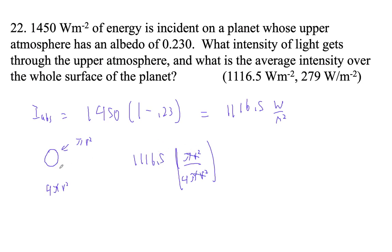The ratio of the cross-sectional area of the earth to its surface area is 1 fourth, which is kind of cool.